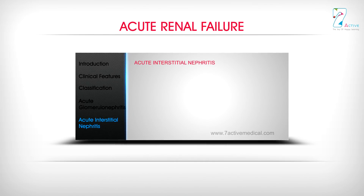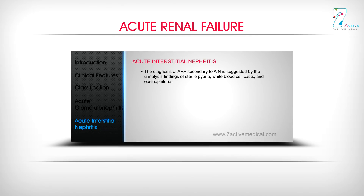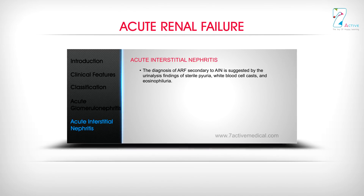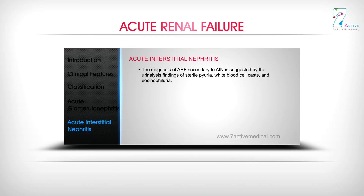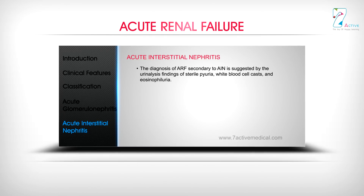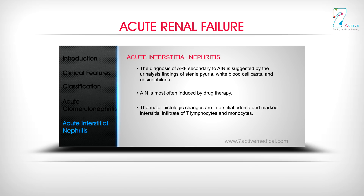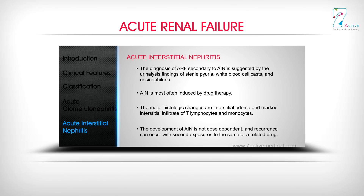Acute Interstitial Nephritis (AIN): The diagnosis of ARF secondary to AIN is suggested by urinalysis findings of sterile pyuria, white blood cell casts, and eosinophiluria. AIN is most often induced by drug therapy. The major histologic changes are interstitial edema and marked interstitial infiltrate of T-lymphocytes and monocytes. The development of AIN is not dose-dependent, and recurrence can occur with second exposures to the same or a related drug.